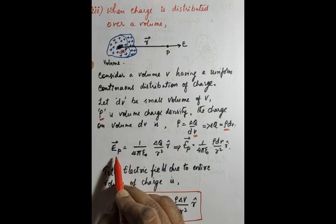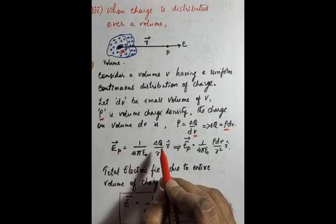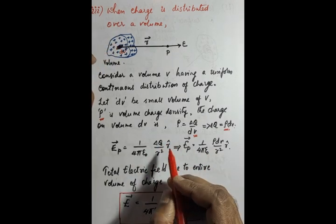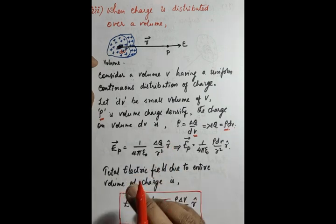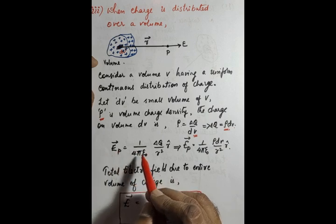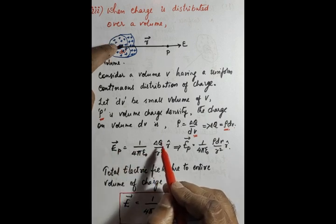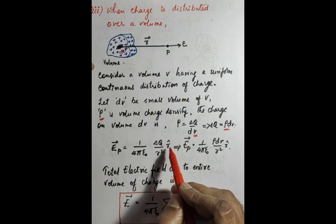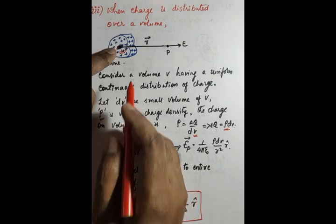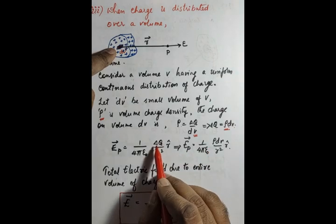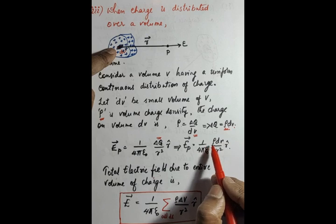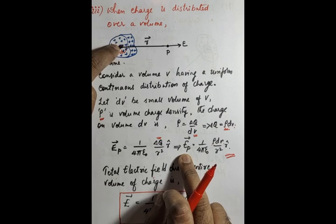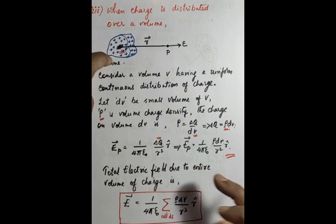The electric field at point P due to the small volume is: vector E_p = (1/4πε₀) × (δq / r²) × r̂. Substituting δq = ρ · dv: E_p = (1/4πε₀) × (ρ · dv / r²) × r̂, where r̂ shows the direction. To get the total electric field for the entire volume, we perform a summation over all small volume elements dv.